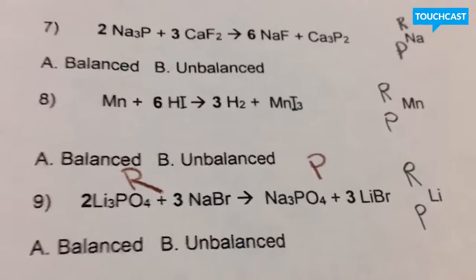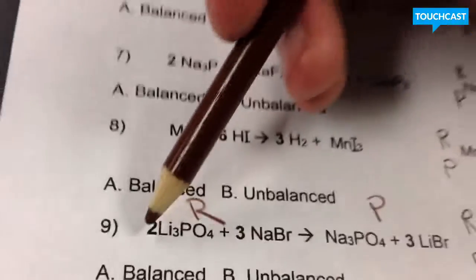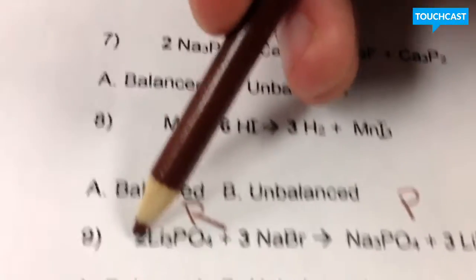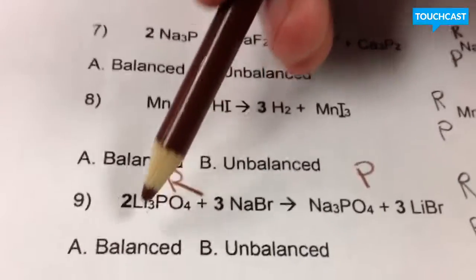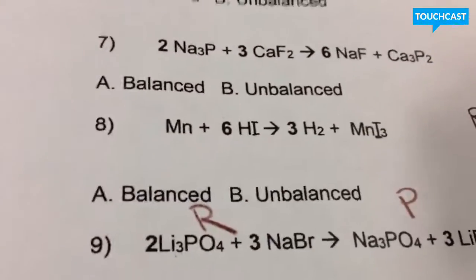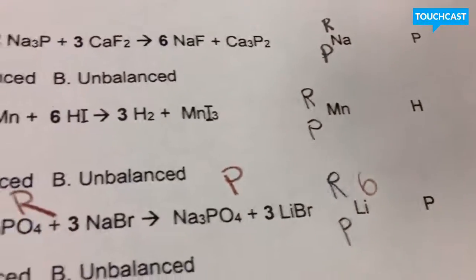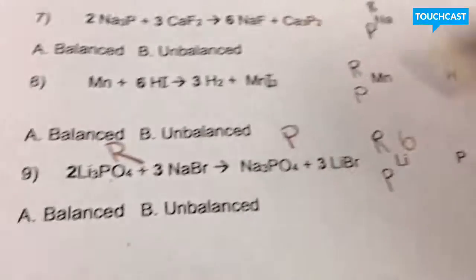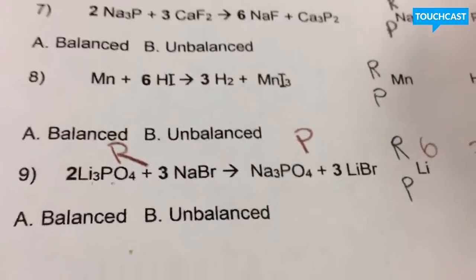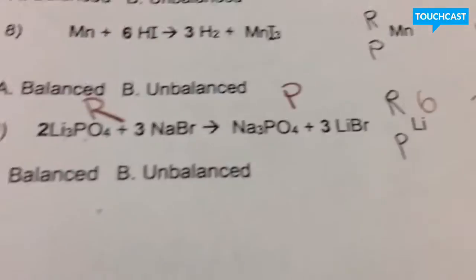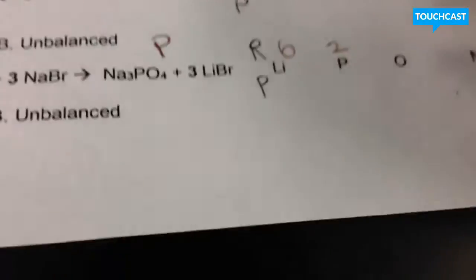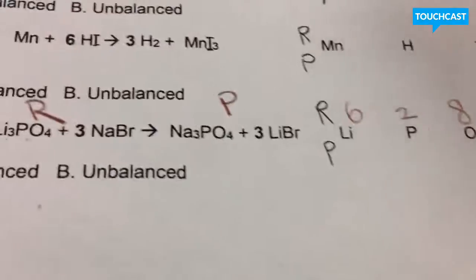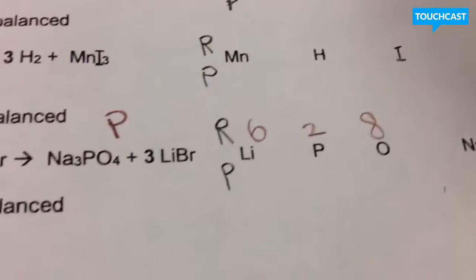So, with our coefficient here, you have two times this entire thing. So two times three would give us six lithiums. Now, two times no number there, which would be one, would give us two phosphorous. And then two times four would give us eight oxygens. Now, once again, that's only on the reactant side.